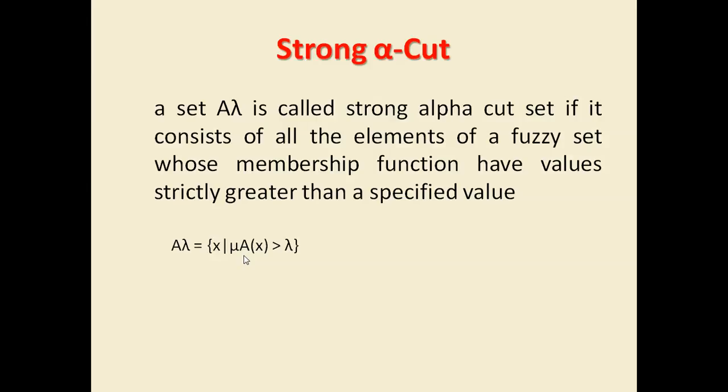But here we are removing equal to. We are only taking the values who are strictly greater than the specified value. So A lambda will now be x where membership value of that x will be strictly greater than lambda. In that case the new set that will be generated will be called strong alpha cut or strong lambda cut.